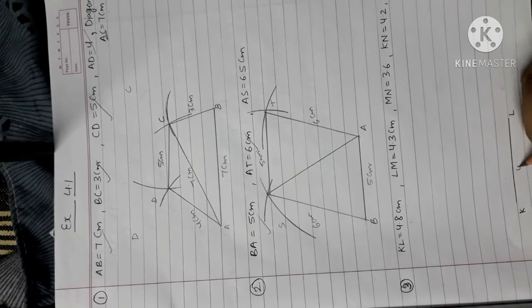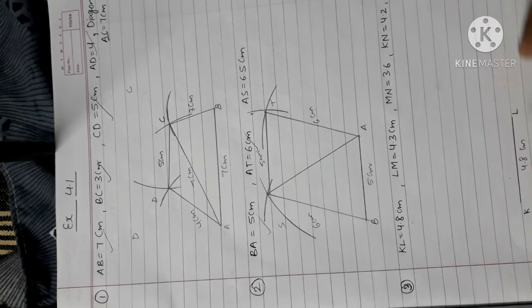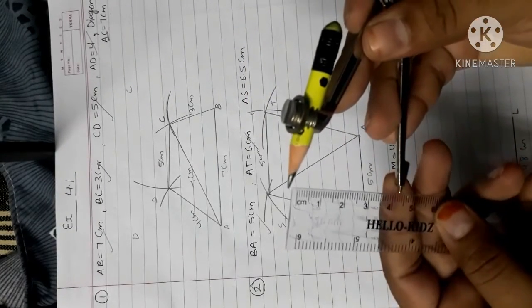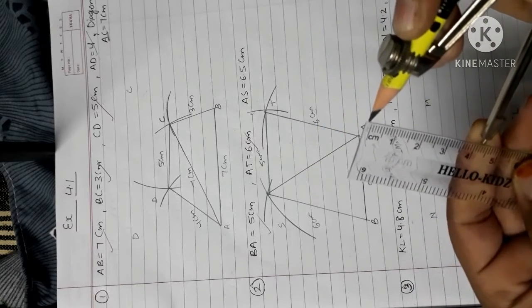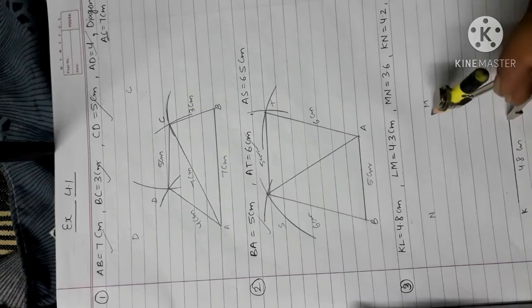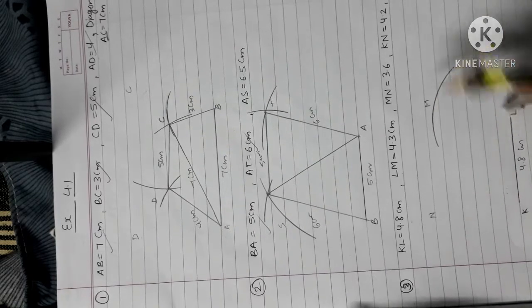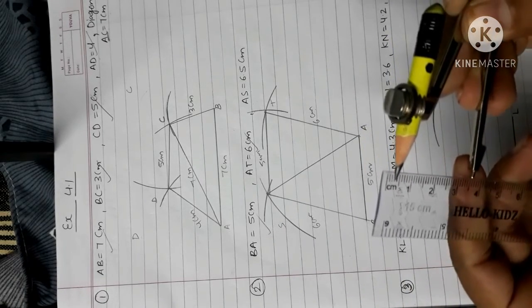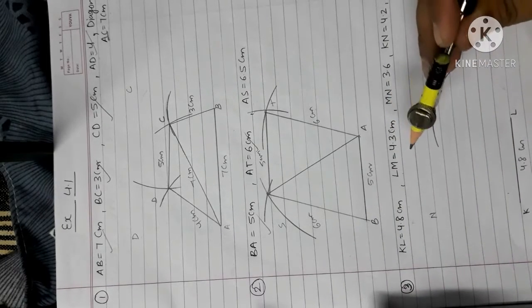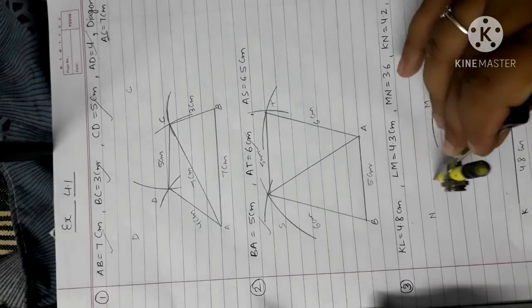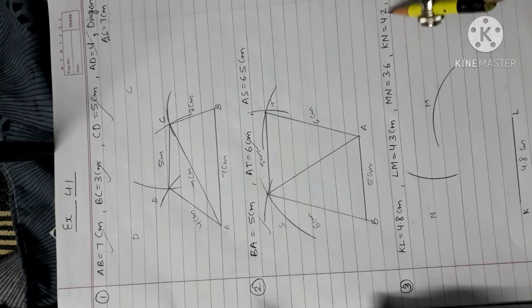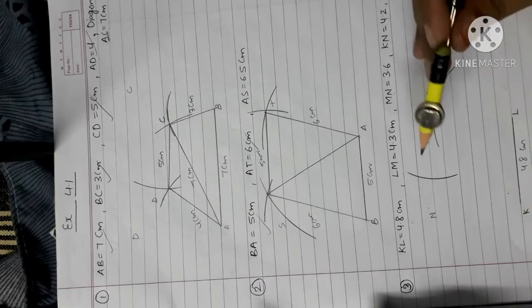KL equals to 4.8 cm. Then here will be M and here is N. LM equals to 4.3 cm. Again open your compass to 4.3 cm and cut it from L to M. Then MN equals to 3.6 cm — 3.6 cm. And L to M equals to 3.6.